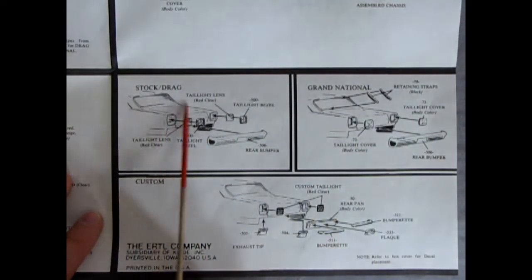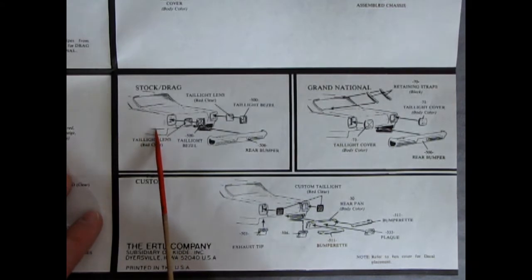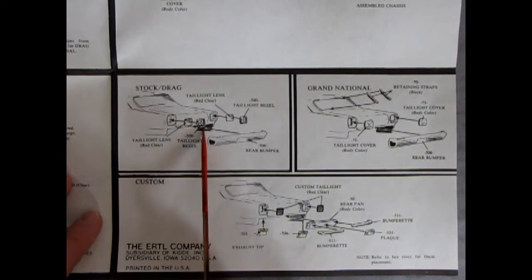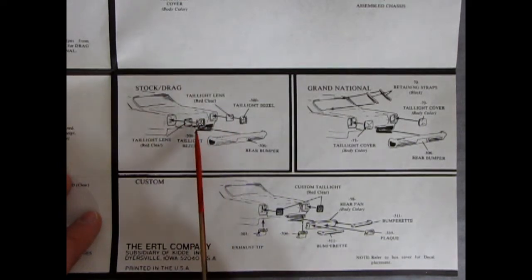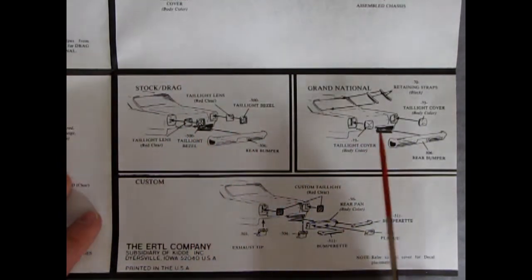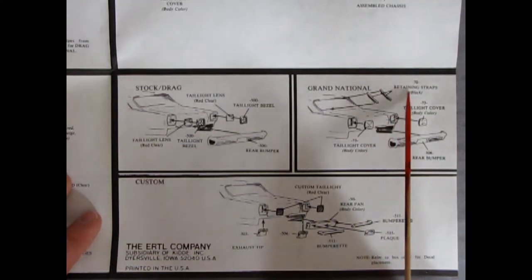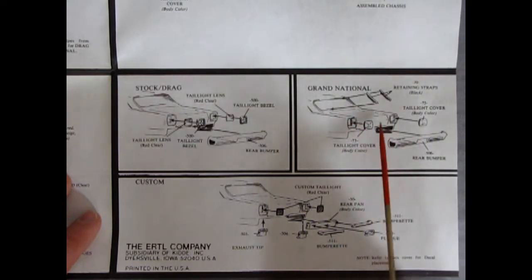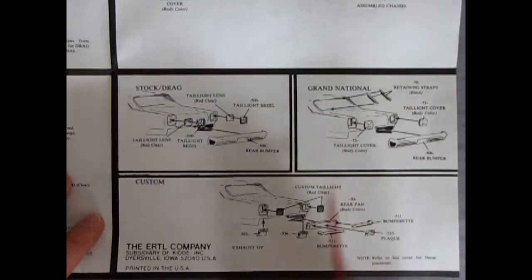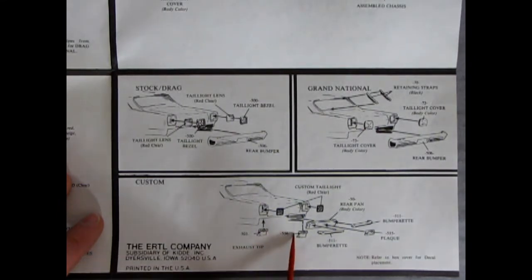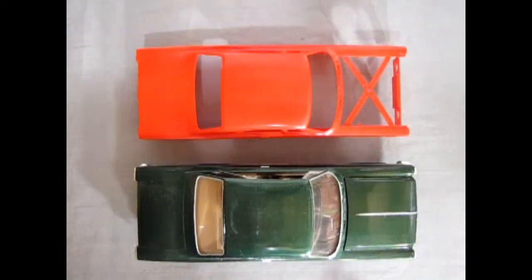Finally we get into this panel which shows the stock and drag options. This is the stock and drag taillights with red plastic and chrome bezels. In the Grand National they give you retraining straps for your windshield and metal covers for your taillights and rear bumper. In the custom version you've got these cool exhaust tips, bumperettes, a rear rolled pan, a plaque, and these custom taillights which fill up the whole full square.